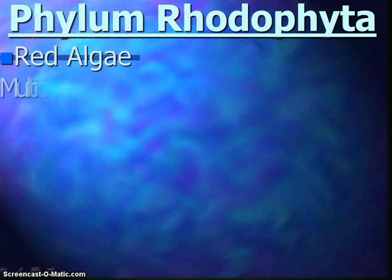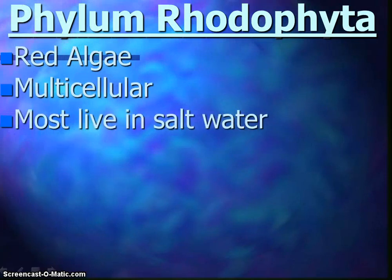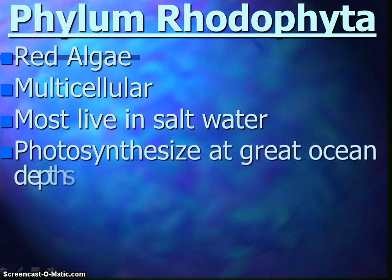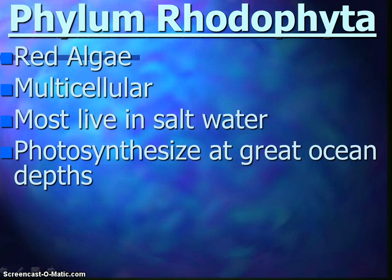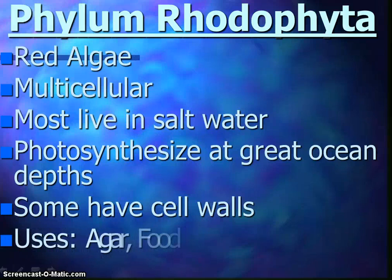Red algae is multicellular. It lives in saltwater but can also live in fresh or land environments. It is very bright red in color, but it can look green in shallow water and black in deep water, with very beautiful feathery shapes. It can photosynthesize at great ocean depths, trapping blue light. Some have cell walls, and we use them for agar — a culture medium for growing bacteria and food — and it's found in ice cream, puddings, cake icings, and so forth.